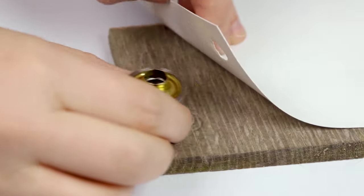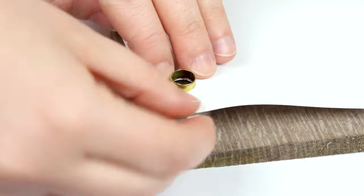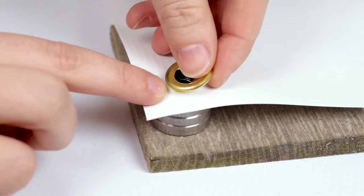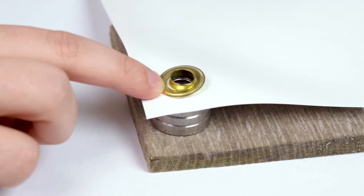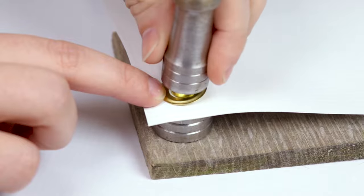Next, take the bottom of the grommet die and half of the grommet and align it with the hole. Now place the washer and grommet die on top. Proceed to hammer them together.